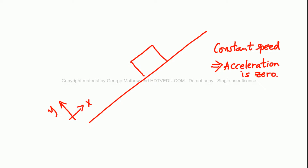If acceleration is zero, net force is zero. If net force is zero, force to the left equals force to the right. So let's identify the forces acting on the mass.